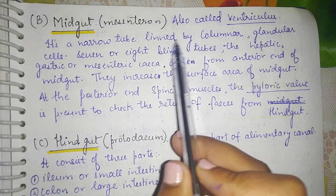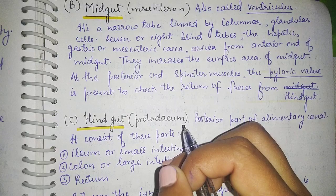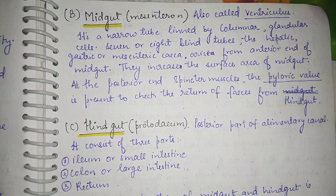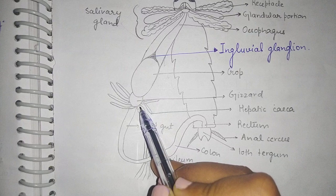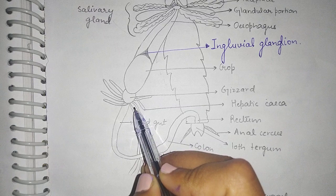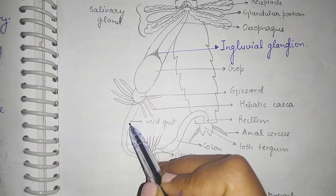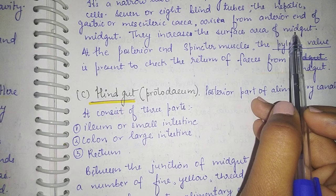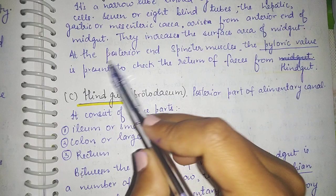The midgut is also called mesenteron or ventriculus. It is a narrow tube lined by columnar glandular cells. Since the midgut is endodermal in origin, it has no cuticular covering. Seven or eight blind tubes called hepatic, gastric, or mesenteric caeca arise from the anterior part of the midgut. These caeca increase the surface area of the midgut.